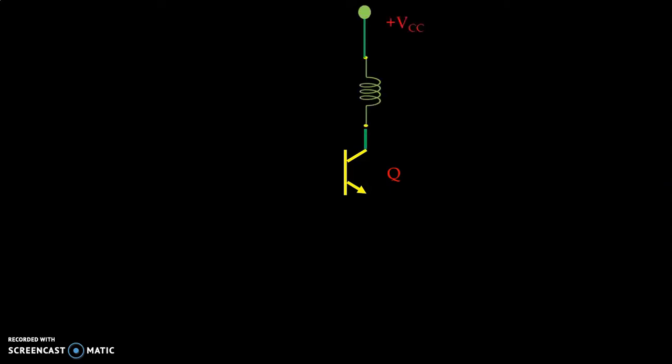The supply plus VCC is given to the collector of the NPN transistor. R1 and R2 both are biasing resistors to provide sufficient bias voltage to the transistor.